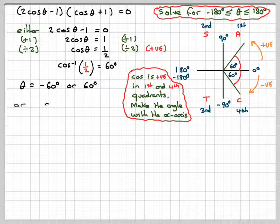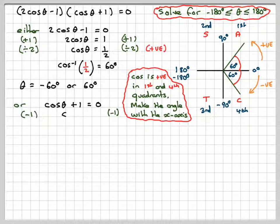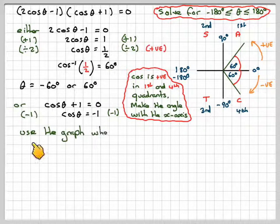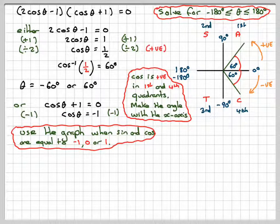Or this bit could be equal to zero, so cos theta plus 1 equals zero. So taking 1 from both sides we get cos theta equals minus 1. And if you remember I told you before in a previous video, you should use the graph when sine and cos is equal to minus 1, zero, or 1.